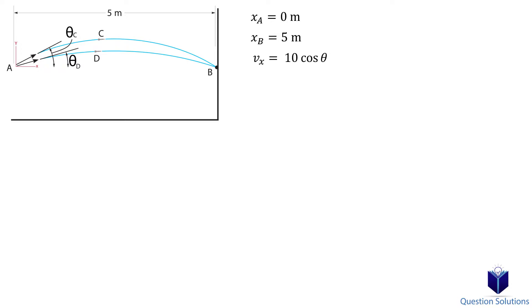In the vertical direction, the starting location for both darts is at 0 meters. The final location is also at 0 meters. The initial velocity of the darts is 10 sin theta. Gravity also affects the darts, so we have negative 9.81 meters per second squared.